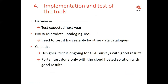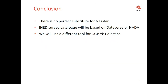As for the last step of the study, we expect to test Dataverse next year. We have already tested Colectica and need to figure out whether it is harvestable by other data catalogs. The Colectica Designer test is ongoing with very good results for GGP, as well as the portal. We will still need to see whether it can be installed on our server. The first conclusion is that there is no perfect substitute for Nesta. The INED survey catalog will be based on Dataverse or NADA — this is still unsolved. We will use a different tool for GGP, and it is very likely that we will use Colectica.